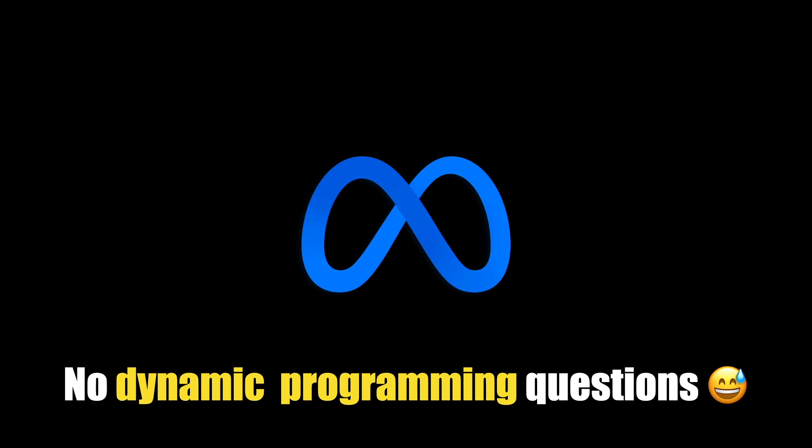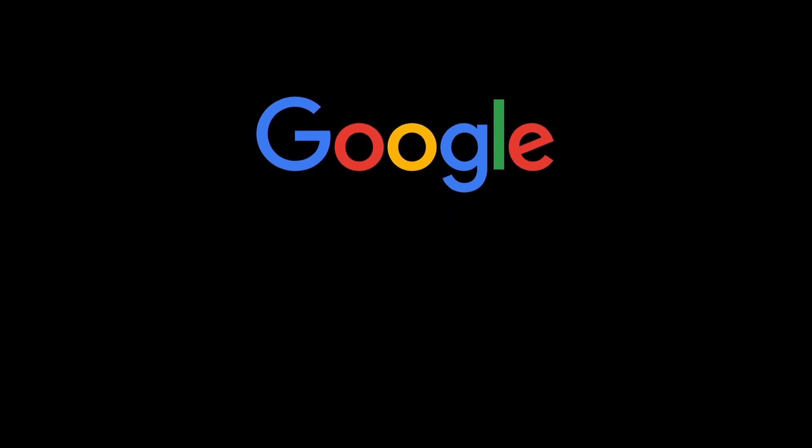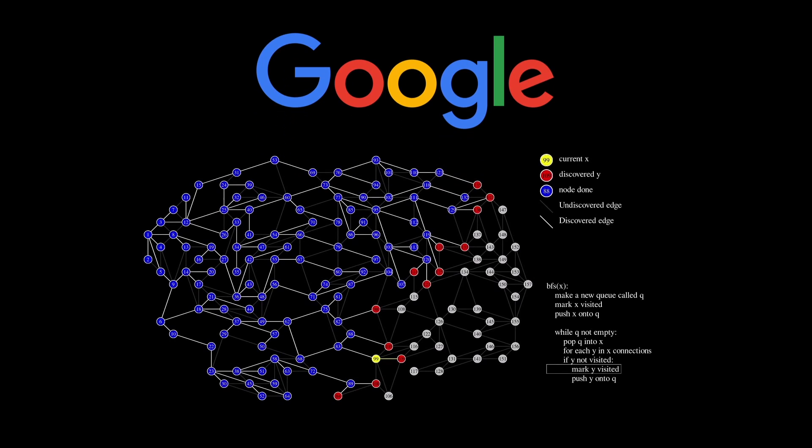For example, when I was interviewing at Meta, they specifically told me multiple times that they don't ask dynamic programming questions. So I intentionally did not study any DP problems while preparing for Meta's interview. My onsite was canceled during the hiring freeze. On the other hand, I've heard that Google really likes to ask dynamic programming. But when I did a screen for Google last year, they asked a fairly challenging graph question instead.